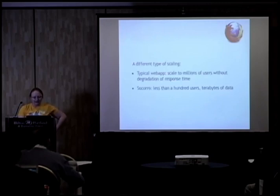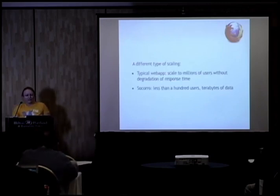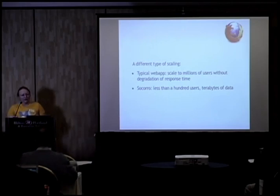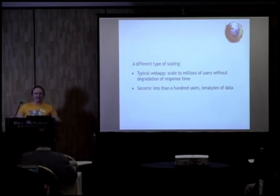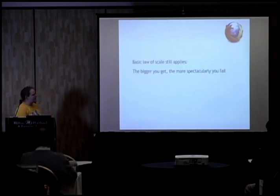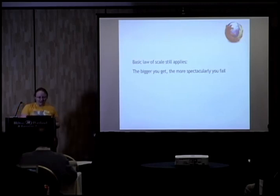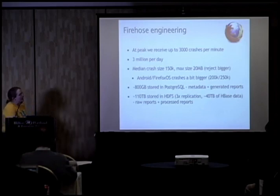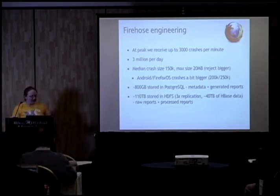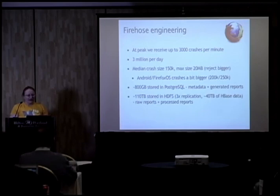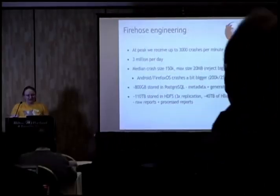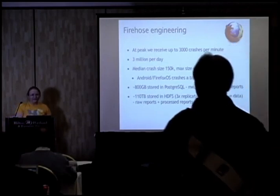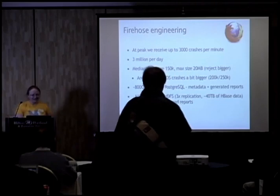To give you an idea of the numbers: I come from a generic web development background where you scale to millions of users, but this is like 100 users and a really large amount of data — a different dimension of scaling. At peak, which tends to be when Europe is still awake and the US West Coast wakes up, we get up to 3,000 crashes a minute. It's around 3 million a day. We expect a 40% increase this year because we just started shipping cell phones.